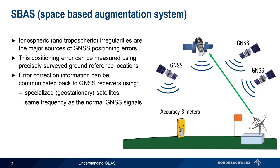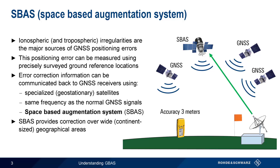The use of this error correction data can increase position accuracy by roughly an order of magnitude. These types of systems are referred to as SBAS, or space-based augmentation systems, since GNSS receivers obtain augmentation data from satellites that are in orbit, that is, in space. SBAS systems provide corrections over wide geographical areas, generally for a given continent or large country.